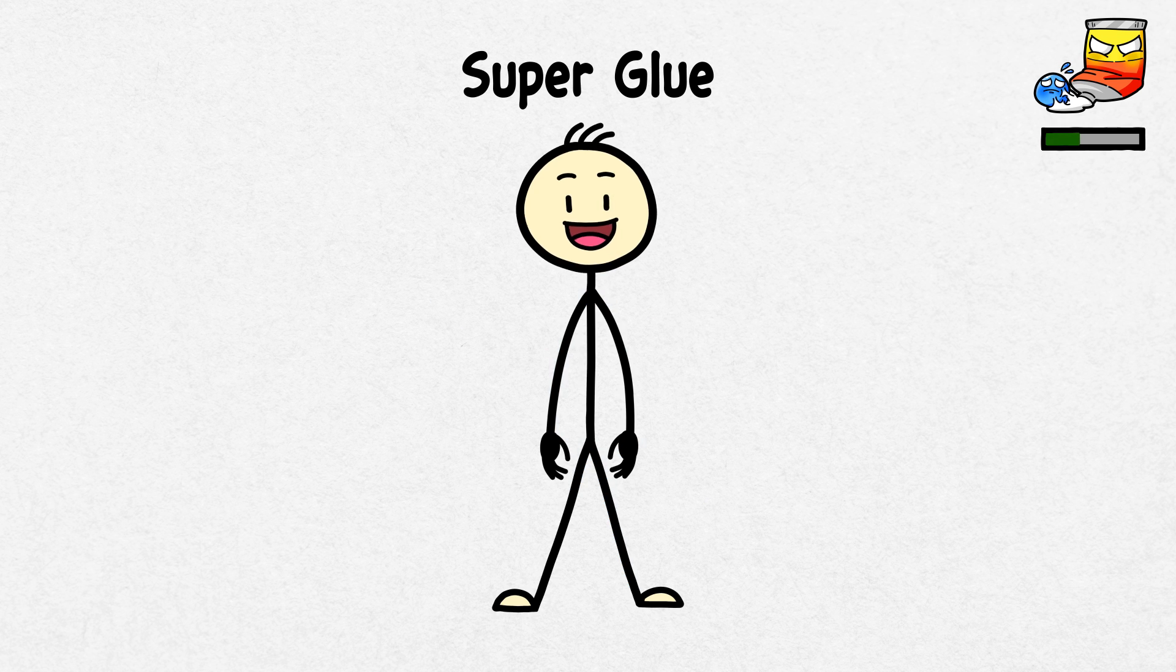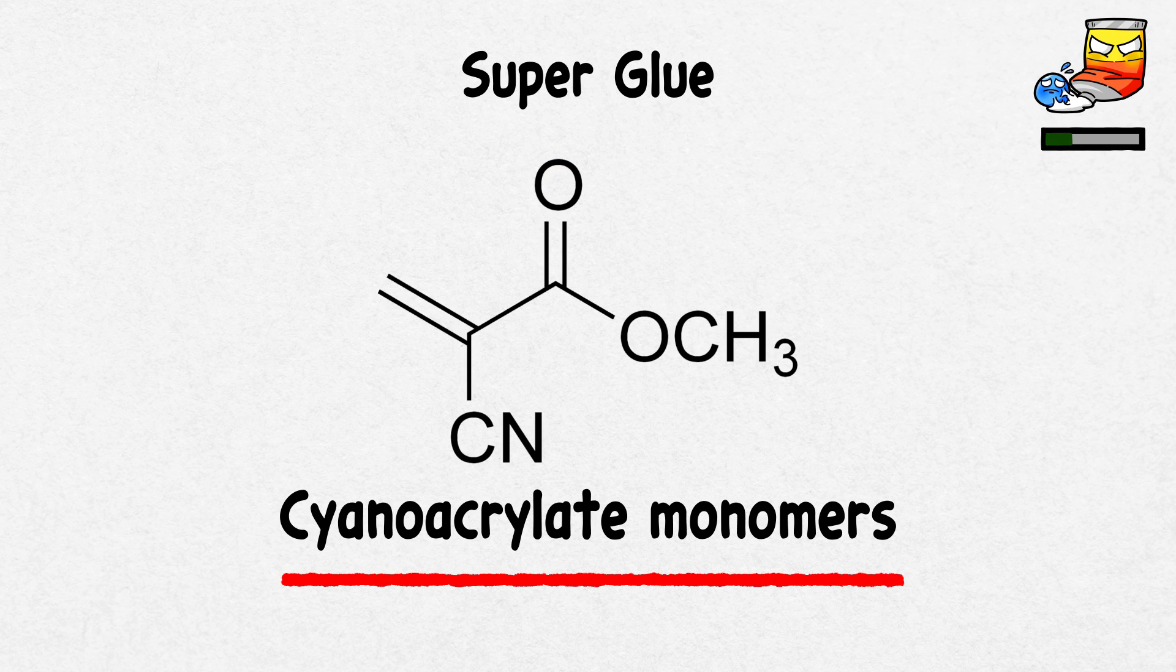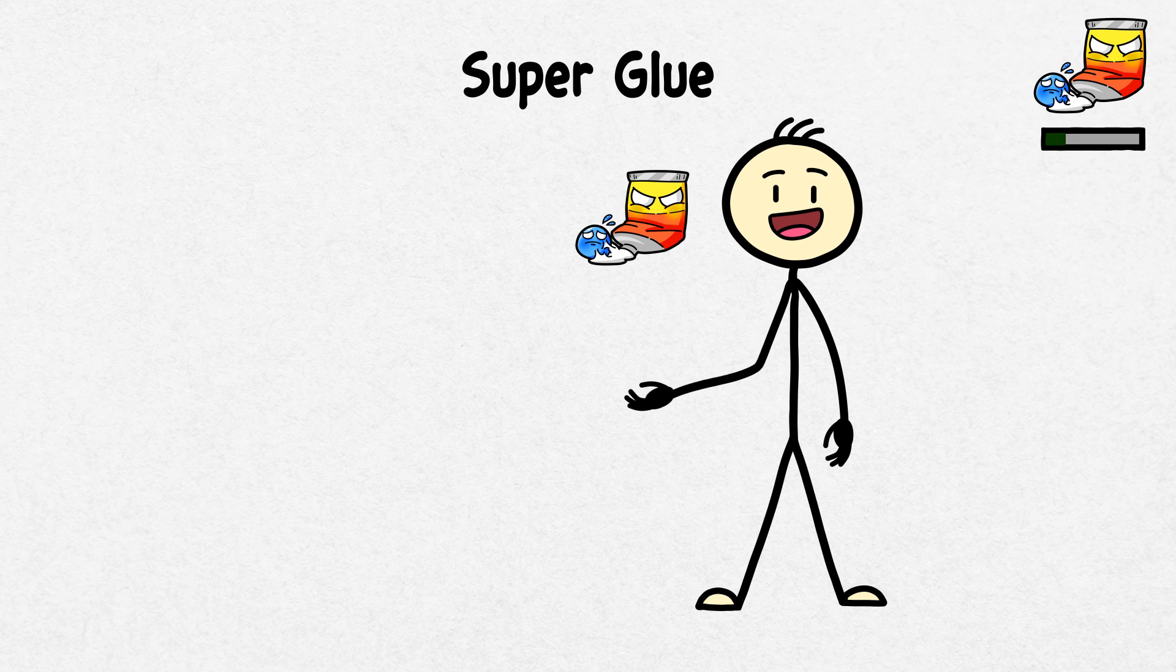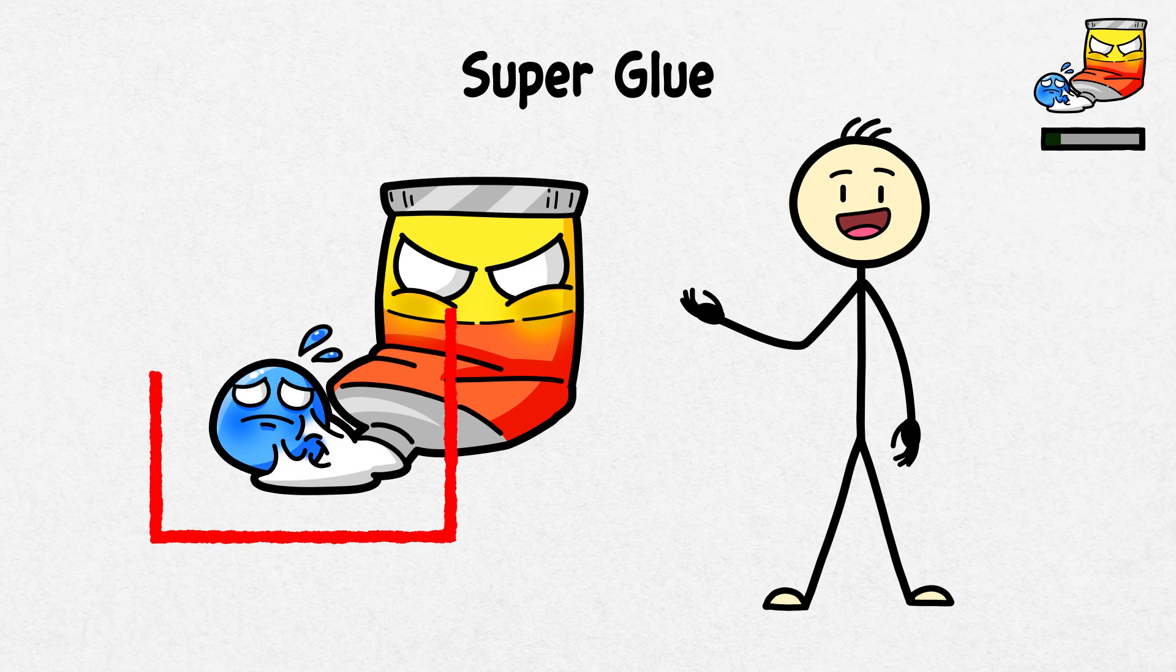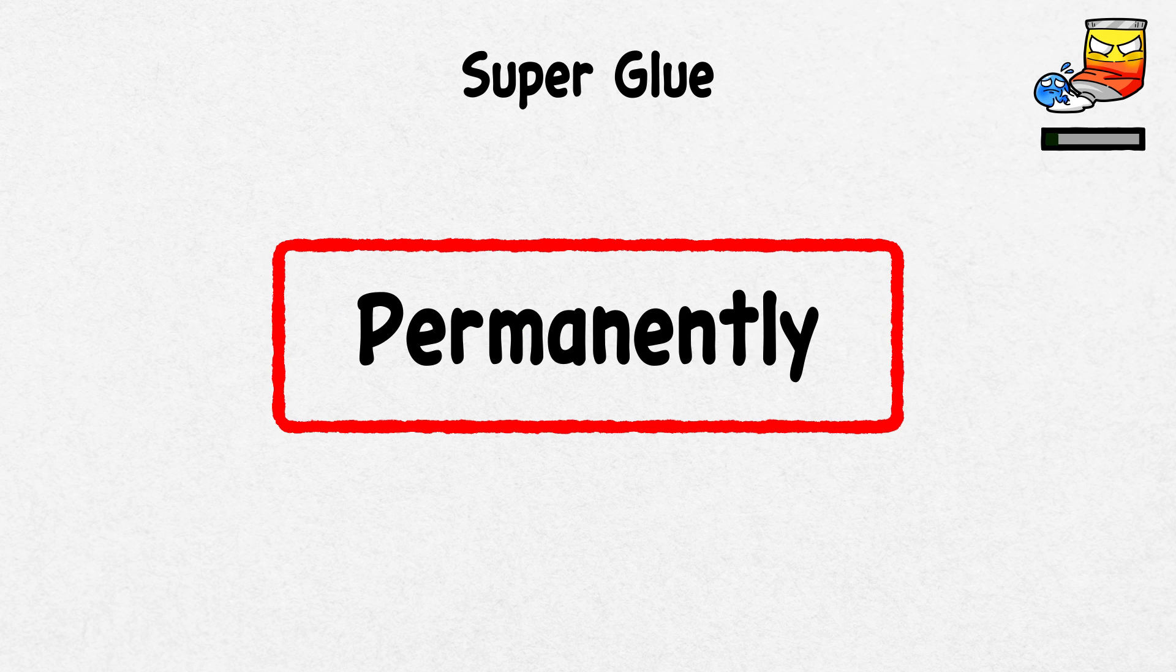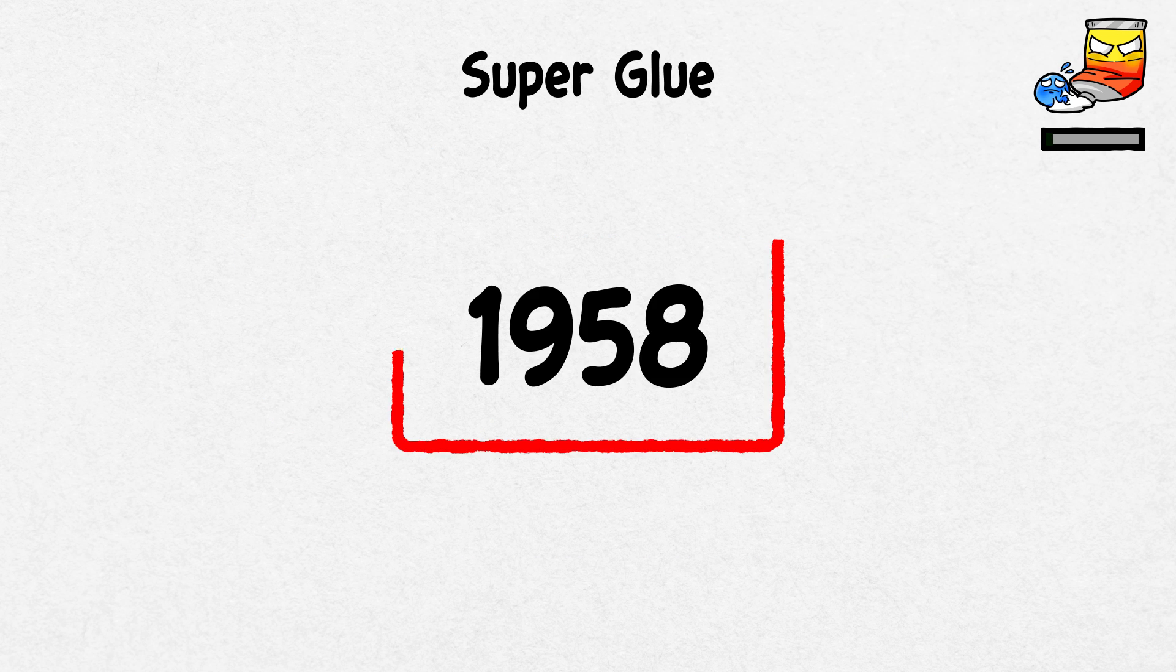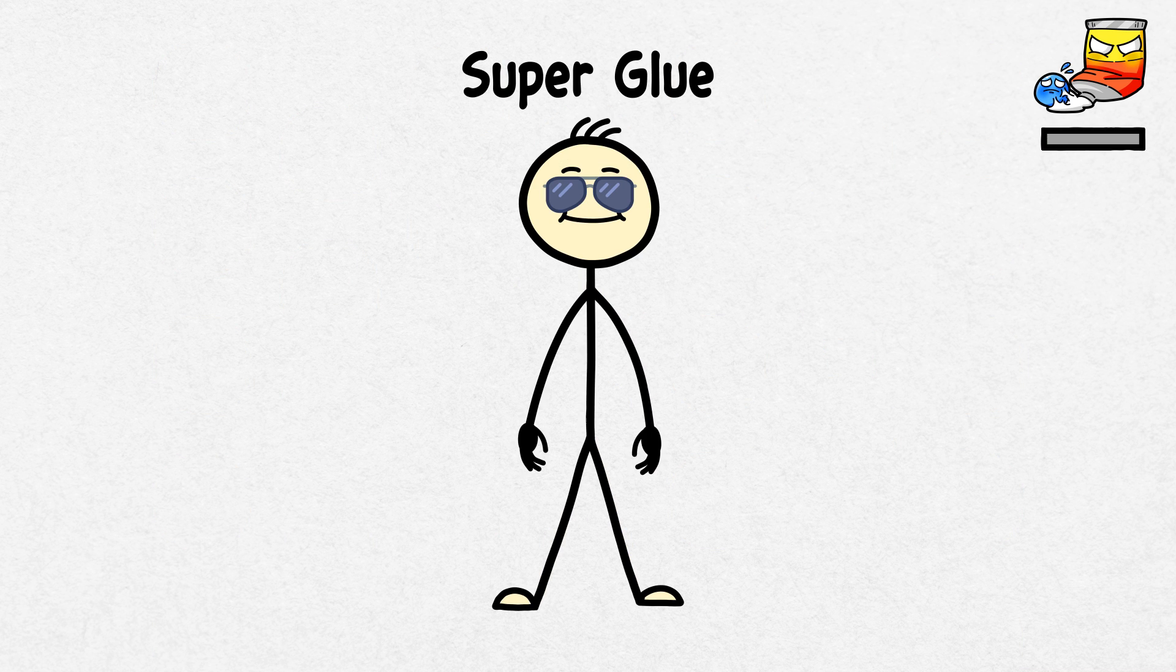A few years later, Coover's team eventually realized that they had something really valuable. They tried the cyanoacrylate monomers again, this time finding that they would bond without heat or pressure. Coover tried this glue on various objects in his lab, and each time, it immediately stuck the items together permanently. They sold the chemical under the name Eastman 910 in 1958, and it soon became a staple of every household, turning Coover into a TV star.